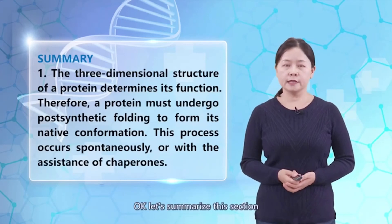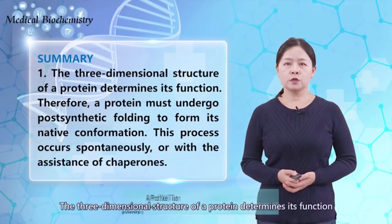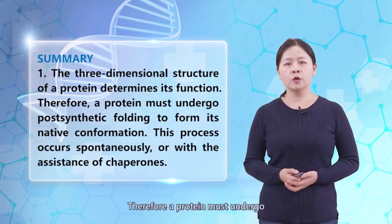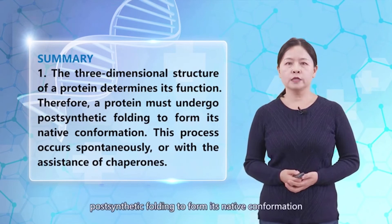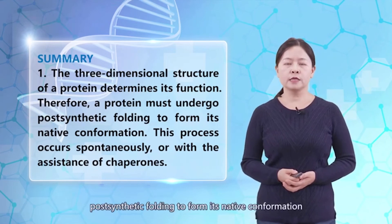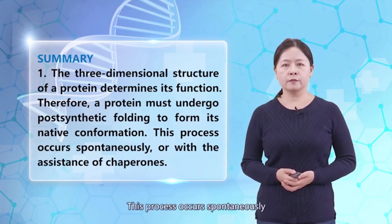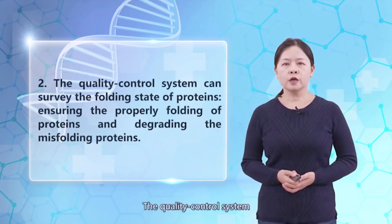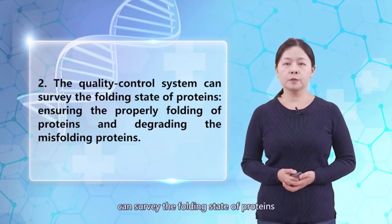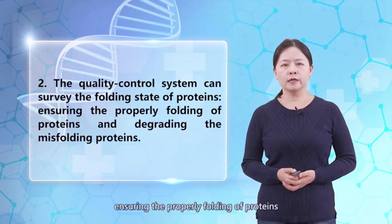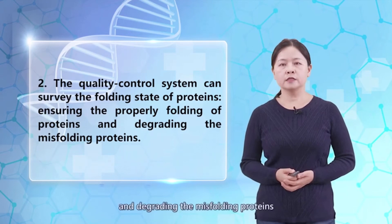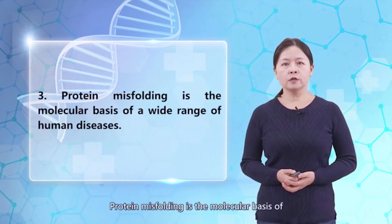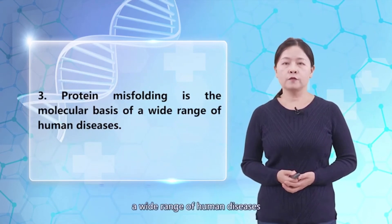Let's summarize this section. The three-dimensional structure of a protein determines its function. Thereby, a protein must undergo post-synthetic folding to form its native conformation. This process occurs spontaneously or with the assistance of chaperones. The quality control system can survey the folding state of proteins, ensuring the proper folding of proteins and degrading misfolded proteins. Protein misfolding is the molecular basis of a wide range of human diseases.